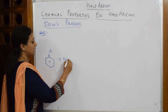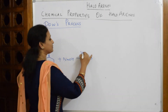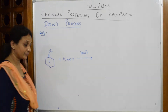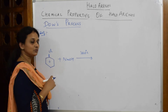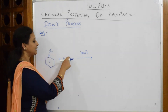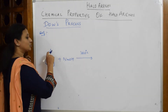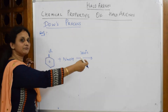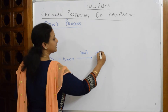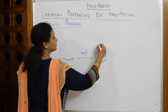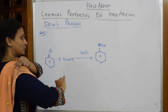To this chlorobenzene, I am going to add sodium hydroxide. This whole reaction is going to be carried out at 360 degrees centigrade. As we know from earlier reactions, we take out NaCl and OH minus.